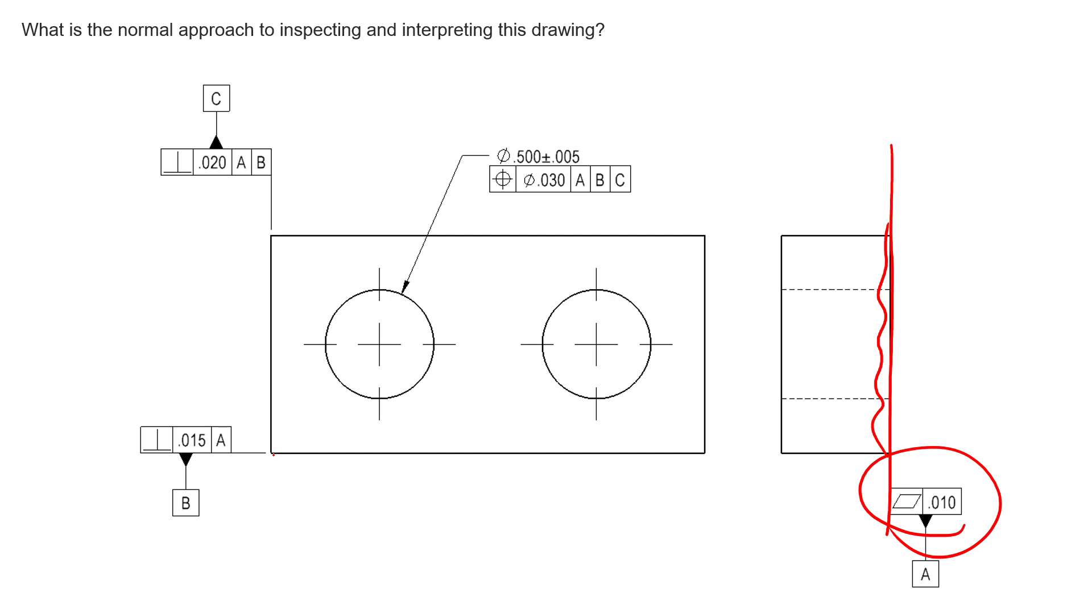Then qualifying that secondary datum with perpendicularity. That will control squareness in this direction. Then we qualify the tertiary datum feature back to A and B. That's going to require that this surface can only be out of perpendicularity so much here. This value is restricting how much perpendicularity error we can have on that surface.